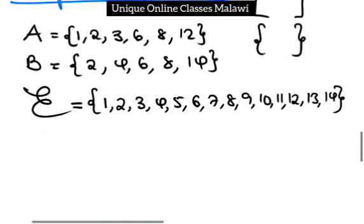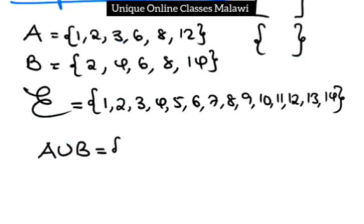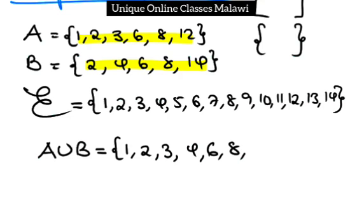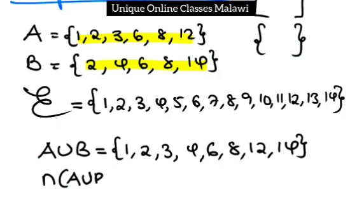Now we have the universal set of A and the universal set of B. Arranging the numbers in order, we get 1, 2, 3, 4, 5, 6, 7, 8. The number of elements in the set of A union B — we have 1, 2, 3, 4, 5, 6, 7, 8. So A union B has 8 elements.